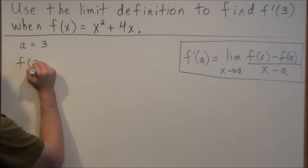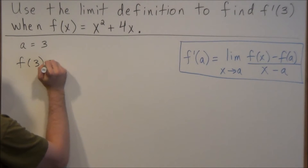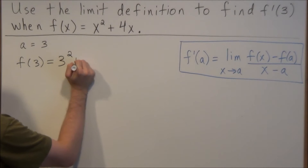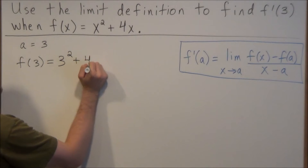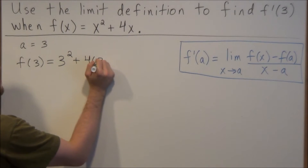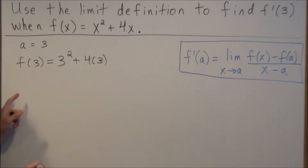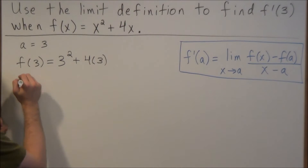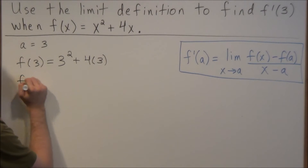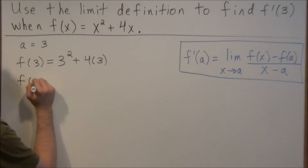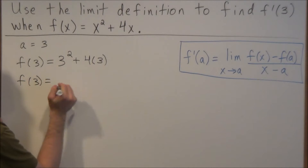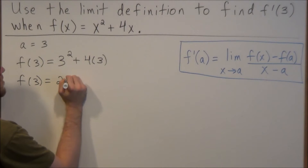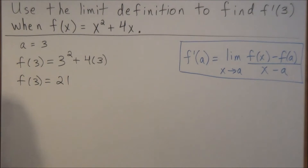So we have f of 3 equals 3 squared plus 4 times 3. All we're doing is plugging into the function that we're starting with. So this tells us f of 3 equals 9 plus 12, which is 21.